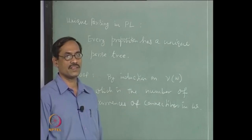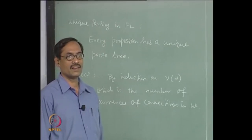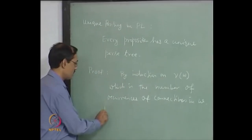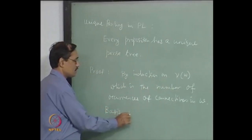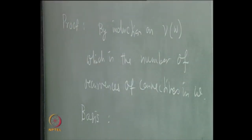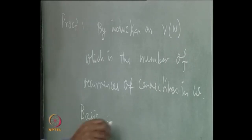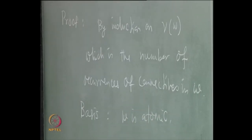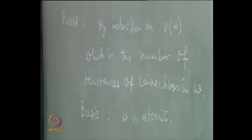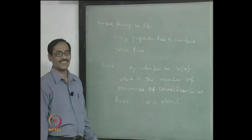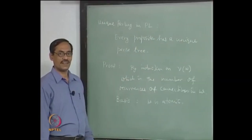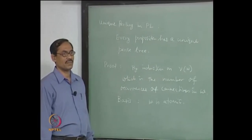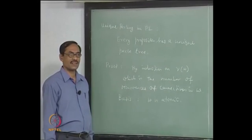The basis case is when ν(W) = 0 — there is no connective, but W is a proposition, therefore W is atomic. Is there a unique parse tree? Yes — W itself is the only root, it has no child, and that becomes the only possible parse tree. Nothing more to do there.